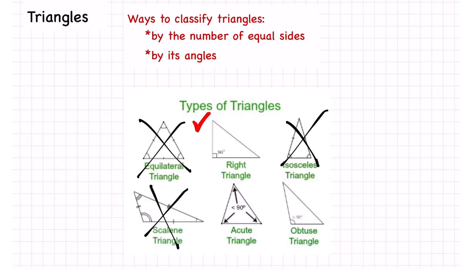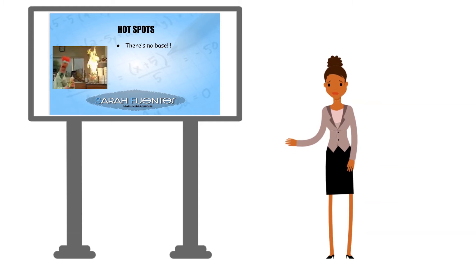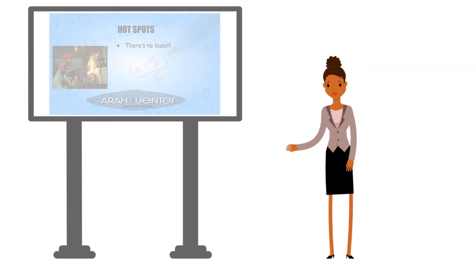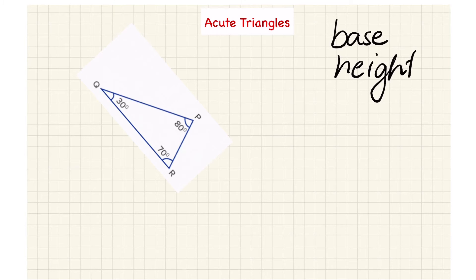In today's lesson we're going to talk about our second triangle type, which are acute triangles. These are triangles that have angles that are less than 90 degrees. It's time for hot spots in the lesson. The first hot spot we're going to address is: what if there's no base? We're always looking at base and height with these shapes, but what if there isn't one — what do we do?